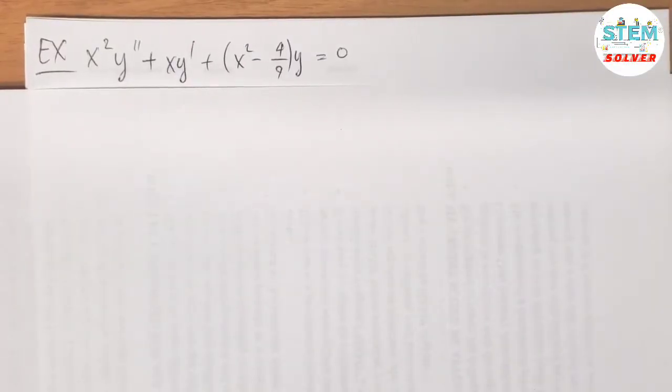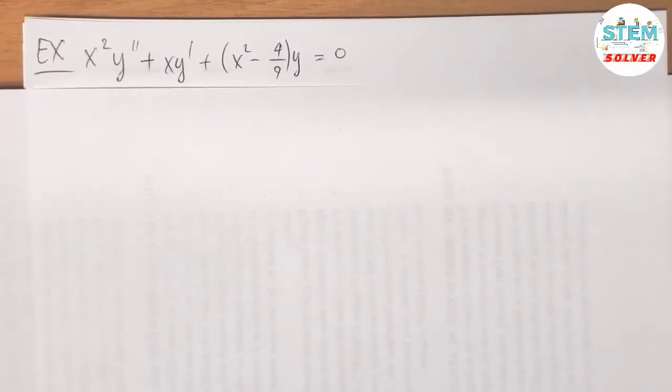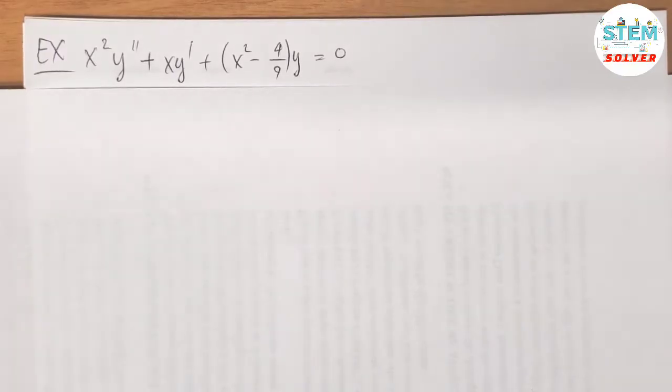Using power series theory to solve a homogeneous differential equation: x·y·y double prime plus x·y prime plus x·y minus 4/9 times y is equal to 0.